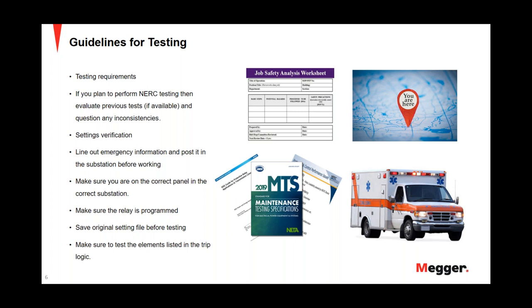The relays were monitoring current and voltage values like they should, and nothing ever tripped — they lucked out. That comes back to the setting verification part: make sure what's actually in the relay is updated and programmed. When we go to substations, make sure you have some type of emergency information available — GPS coordinates of the substation, telephone numbers to local fire departments in those areas. When you're a test technician by yourself going out to location, you want to make sure you have a way to get help if needed.